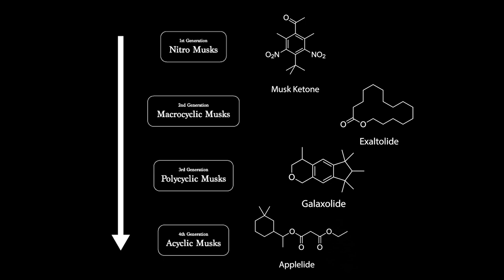What I found helpful in understanding musks better was going through their history and realising there were different generations of musks with different similarities. Looking at the structural differences between the different classes of musk molecules really helped guide my smelling and notice similarities between musks of the same category. I'm going to give you a quick primer on the history of musks and the different classes.